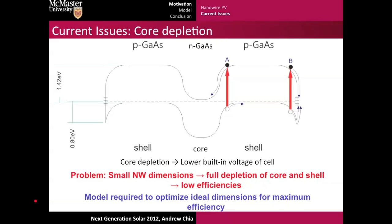As such, we require a model that can help us understand the depletion of both the core and the shell of these structures and subsequently optimize ideal dimensions for maximum efficiency.